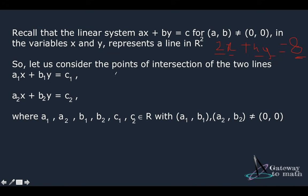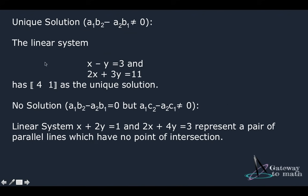Now let us consider points of intersections of two lines. So these are just two line equations. We can take anything and the condition is that a1, b1, a2, b2 shouldn't be equal to 0 comma 0. So this is the condition.